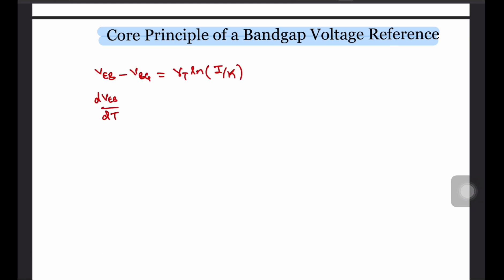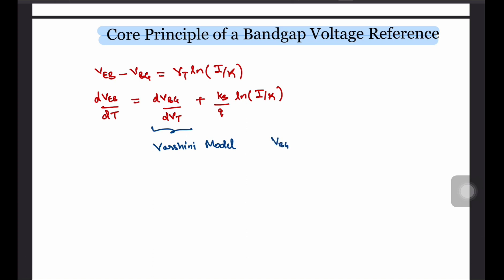Differentiating this equation with respect to T to find the variation of VEB with temperature, we get dVEB by DT equals to dVBG by DT plus KB over Q times ln I by K. The temperature dependence of the bandgap voltage can be computed as per the Varshney model. However, that dependence is fairly weak. It goes something like VBG at a particular temperature T is equal to VBG at the temperature of 0 kelvin minus alpha T square over beta plus T and would vary by about 50 millivolts from room temperature to 0 kelvin.